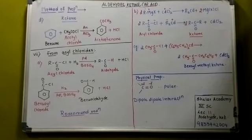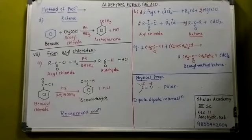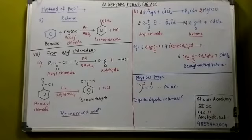Now, going for the physical properties. Aldehydes and ketones are highly polar in nature. Polarity is because of the difference in the electronegativity. You can see that the bond is polar - carbon has delta positive charge, oxygen has delta negative charge.